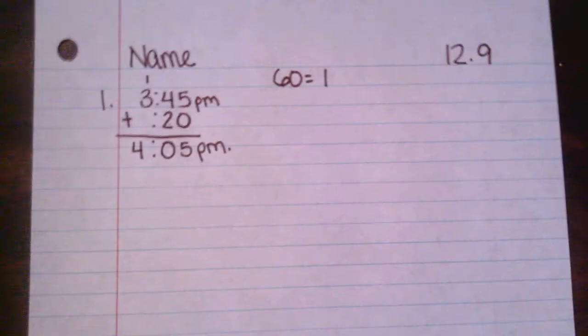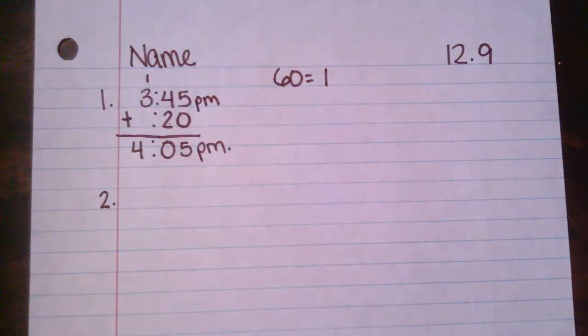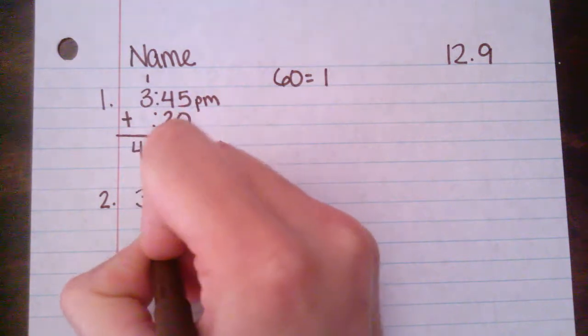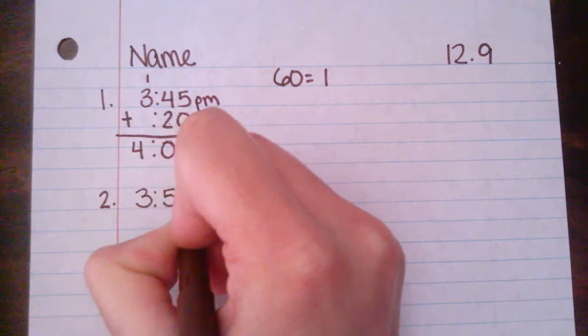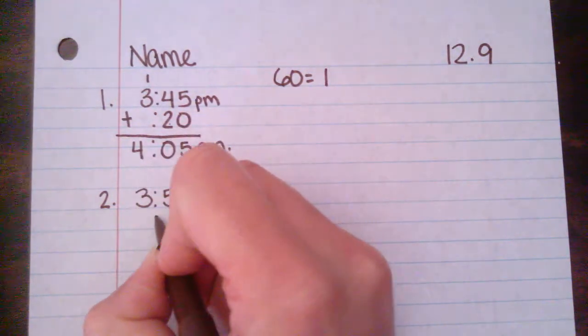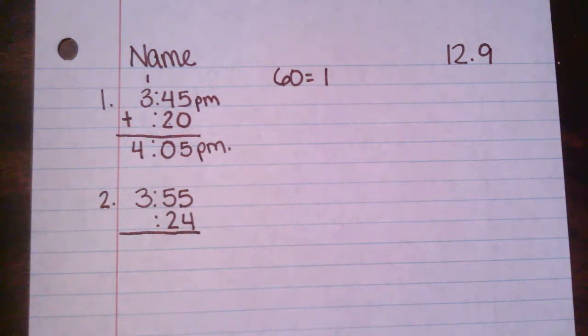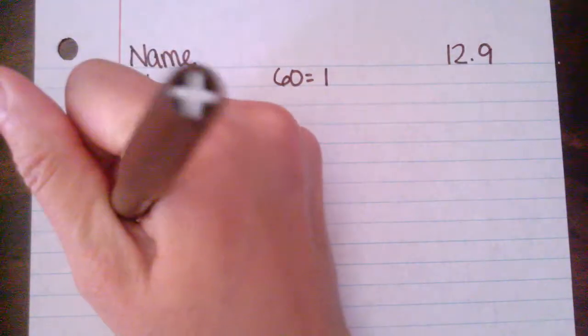Okay, let's try out number two. Brendan spent 24 minutes playing a computer game. He stopped playing at 3:55 p.m. and went outside to ride his bike. What time did he start his computer game? So we know that he ended at 3:55 p.m. and we know that he played for 24 minutes. We need to know when he started. So I'm going to take away those 24 minutes.